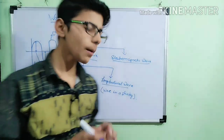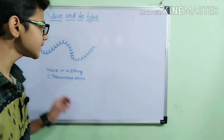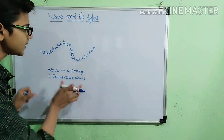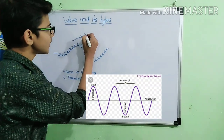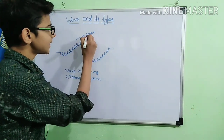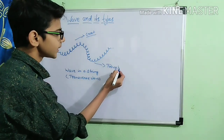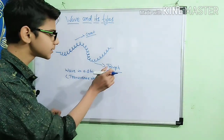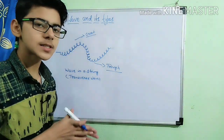Now let's look at the diagram of transverse waves in detail. This is a rough diagram of a transverse wave in a string. The elevation in the transverse wave is known as the crest, and the depression is known as the trough. That is the short summary on transverse waves.